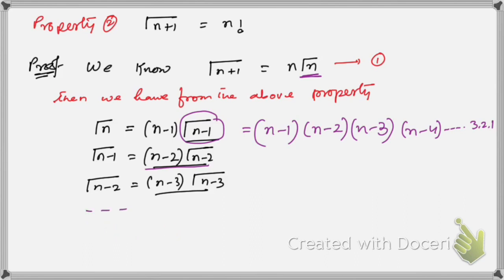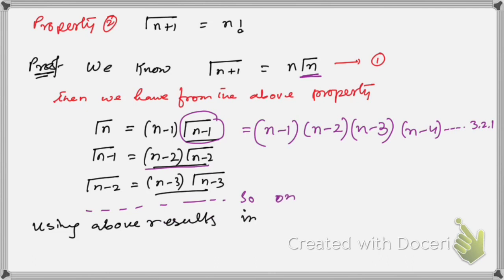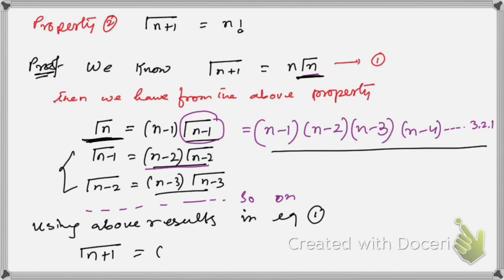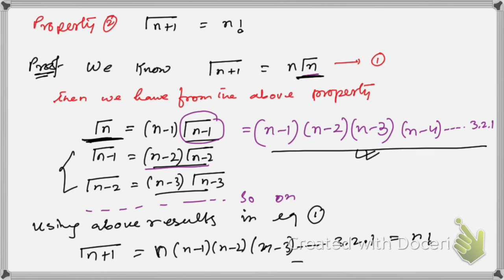Using the above results in equation (1): Γ(n+1) = n·Γ(n), and substituting Γ(n) = (n−1)·(n−2)·(n−3)·...·3·2·1 = n!, we get Γ(n+1) = n·(n−1)·(n−2)·...·3·2·1 = n!. Hence it is proved that Γ(n+1) = n!.